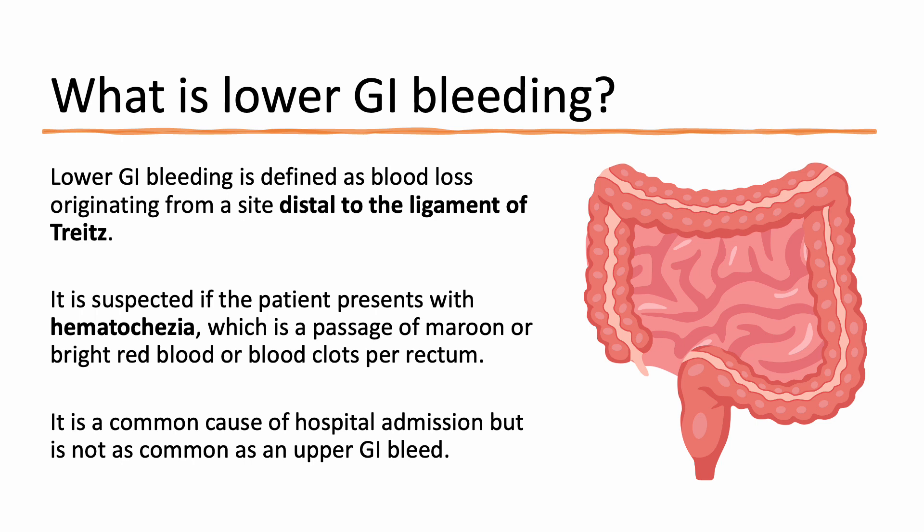Lower GI bleeding is defined as blood loss originating from a site distal to the ligament of Treitz. It is suspected if the patient presents with hematochezia, which is a passage of maroon or bright red blood or blood clots per rectum. It is a common cause of hospital admission, but not as common as upper GI bleeding.